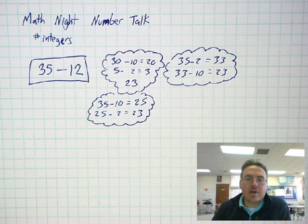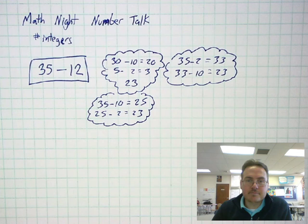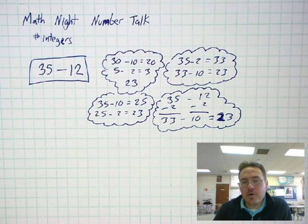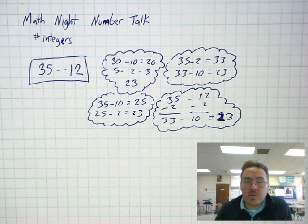Or maybe you subtracted the two first, and then subtracted the 10, and still got 23. Maybe you peeled two off each of your numbers, so you have 35 minus 12, it's become 33 minus 10, and you still get 23 that way.